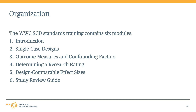The sixth and final module provides an introduction to the study review guide used to document findings from a WWC review of a single case design study. This module discusses the purpose of the study review guide, its major components, how to enter information from a study into a guide, extracting data from primary studies, and the calculation of the non-overlap effect size.